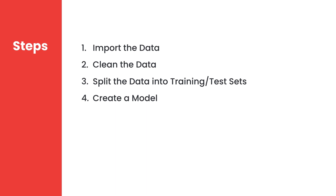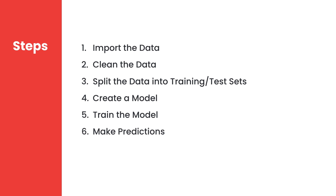The good news is that we don't have to explicitly program an algorithm — there are libraries that provide these algorithms. One of the most popular ones we're going to look at is scikit-learn. We build a model using an algorithm, then we need to train it by feeding it our training data. Our model will then look for patterns in the data, so next we can ask it to make predictions — for example, is this a cat or a dog?